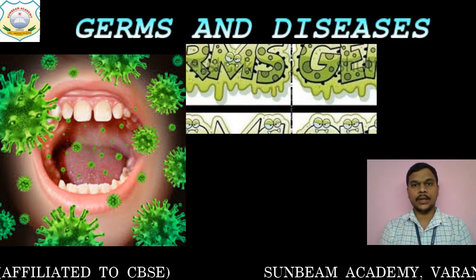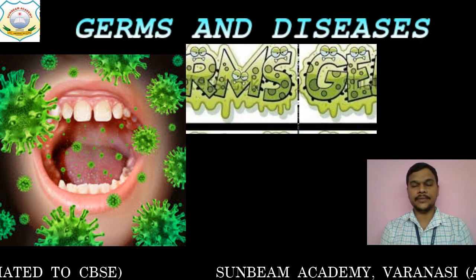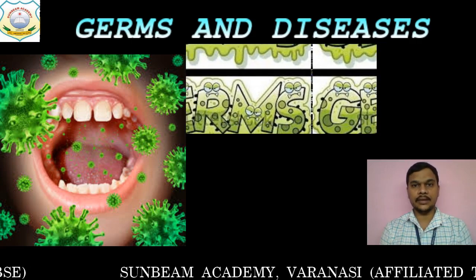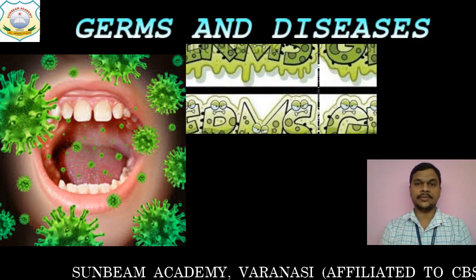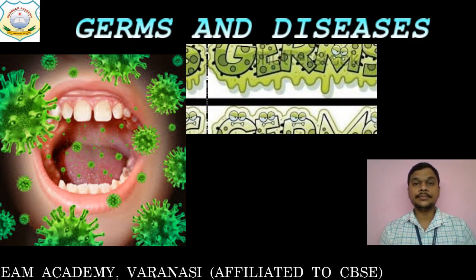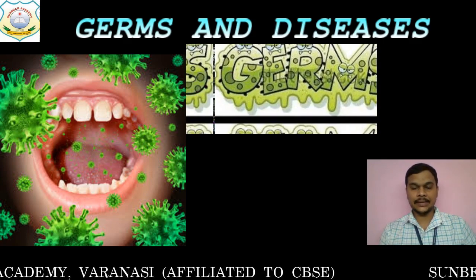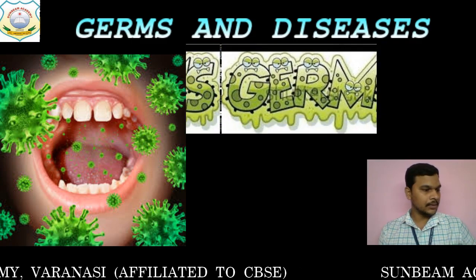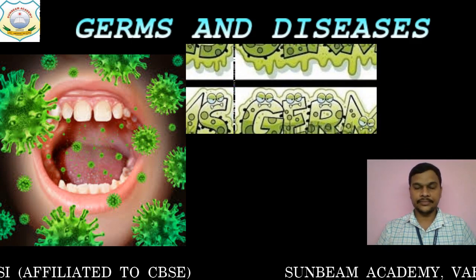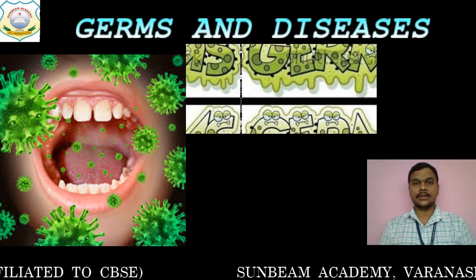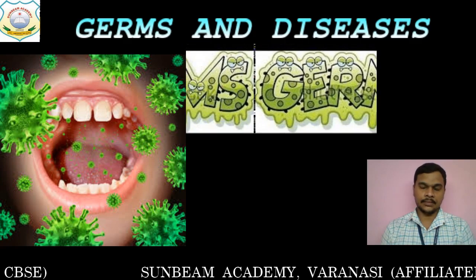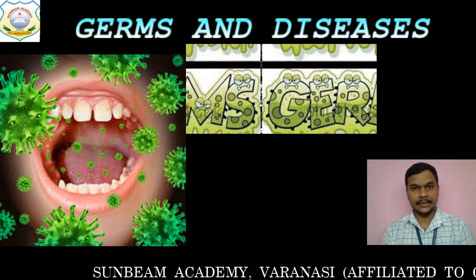Next, we covered the different types of preventive measures we can take to protect ourselves from these microbes. The first categorization was to remain in a hygienic condition. Second was to keep our homes and surroundings clean. Third was to use clean water and food — that is, washing fruits and vegetables before eating or cooking them. So this was all which we have studied till now.